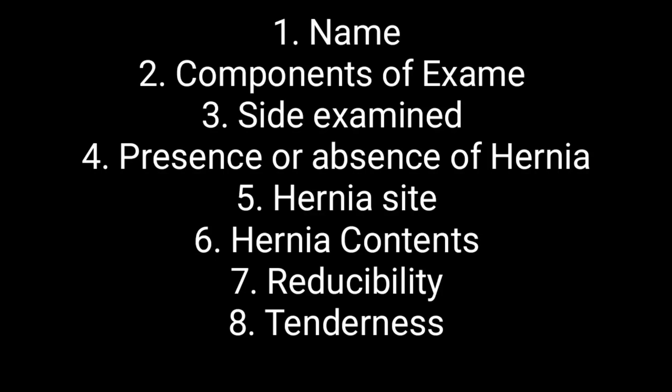On point six, look for the hernial contents — is it a mental sac, are there bowel loops, is there fluid, or are there bowel movements? You must mention these things because hernia contents should be in your report. For point seven, reducibility — whether the hernia is reducible or not. For point eight, whether the hernia is tender or non-tender, which helps identify whether there is an inflammatory process going on.